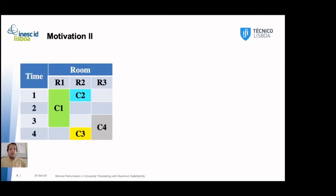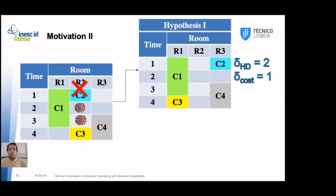Now, let's consider a timetable with four time slots, three rooms and four classes. Now, imagine that room 2 has to close down due to COVID contamination. So, we will need to change the assignment of class 2 and 3. Hypothesis 1 is to change class 2 to room 3 and class 3 to room 1. This has a Hamming distance of 2. The Hamming distance is the distance between the original solution and the new found solution. As only two classes change assignments, the Hamming distance is 2.